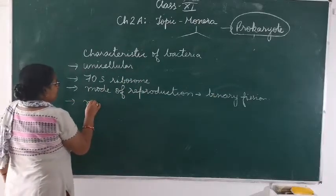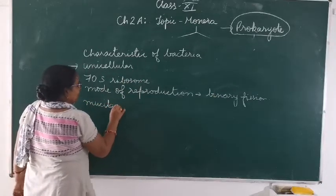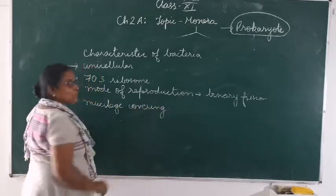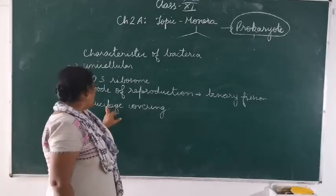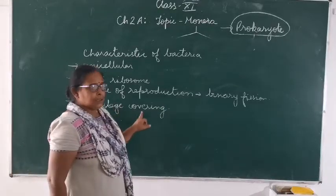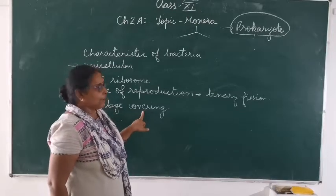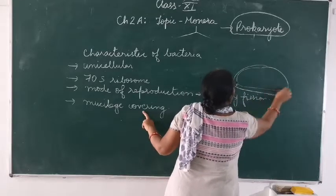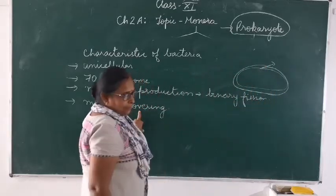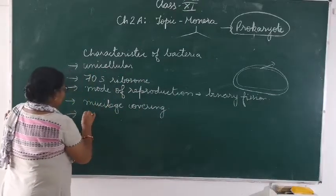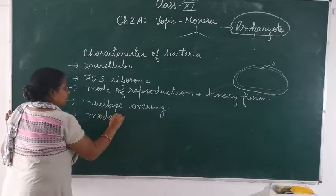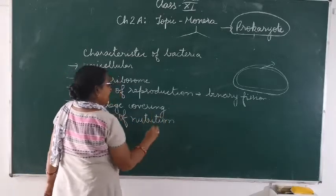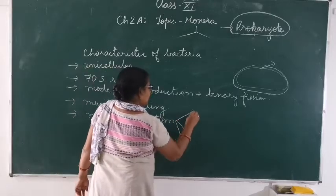This nucleoid covering — because the bacteria has to survive in unfavorable conditions. So the bacteria, with the help of nucleoid covering, is able to survive. Inside this bacteria you may also get the inner lining. Nucleoid covering. After that, you may get the mode of nutrition — no problem.